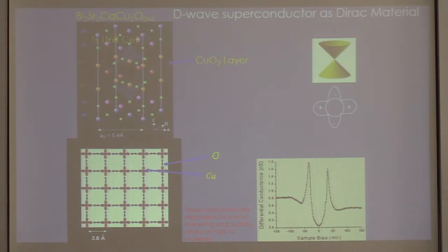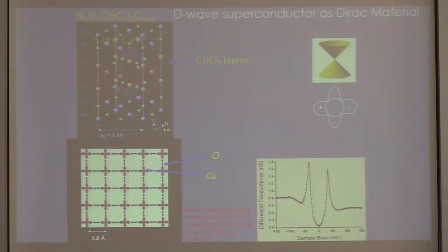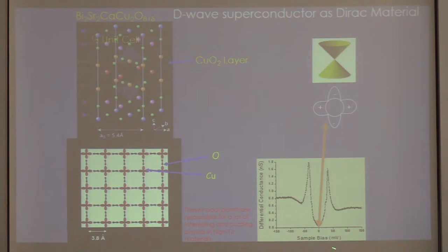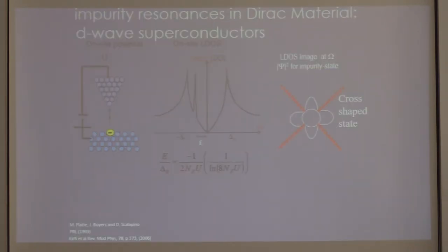The Dirac point arises because when you put a quasiparticle at the Fermi surface and go around it, the gap goes through a node — it changes sign from plus to minus. So there is a certain place where in the Bogoliubov-de Gennes equation both the diagonal and off-diagonal pieces of the Hamiltonian vanish, and this is the source of the Dirac point. These Dirac nodes are responsible for the low-lying spectra and the tunneling conductance at low energies, and are responsible for all sorts of interesting behavior.